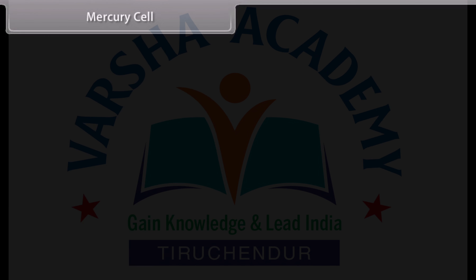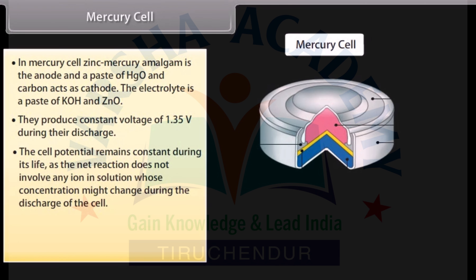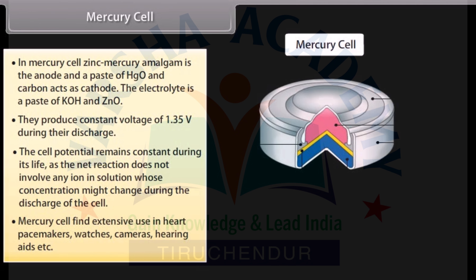Mercury cell. In mercury cell, zinc-mercury amalgam is the anode and a paste of HgO and carbon acts as cathode. The electrolyte is a paste of KOH and ZnO. They produce a constant voltage of 1.35 volts during discharge. The cell potential remains constant during its life as the net reaction does not involve any ion in solution whose concentration might change. Mercury cell finds extensive use in pacemakers, watches, cameras, hearing aids, etc.